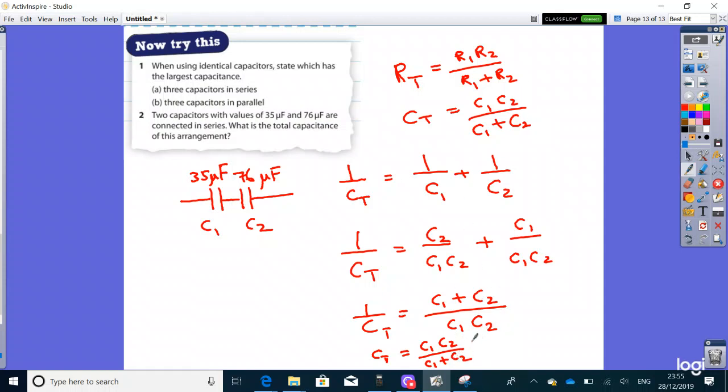Because it's 1/CT, to find CT, I need to take the reciprocal of this whole thing. CT equals 1 over the entire fraction, which means flipping it upside down. Just flip the numerator and denominator. So CT = (C1C2)/(C1 + C2).